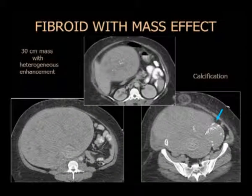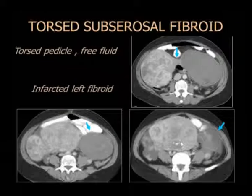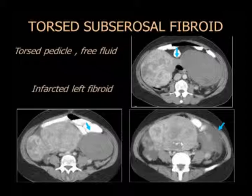Acá una paciente que llegó con una masa grande, de 30 centímetros llegando hasta la punta del hígado, con efecto masa. Cuando hay fibromas de la submucosa muy grandes, puede haber torsión a nivel del pedículo y el cuadro agudo puede conllevar dolor importante. Esto se confirmó en la resección quirúrgica.